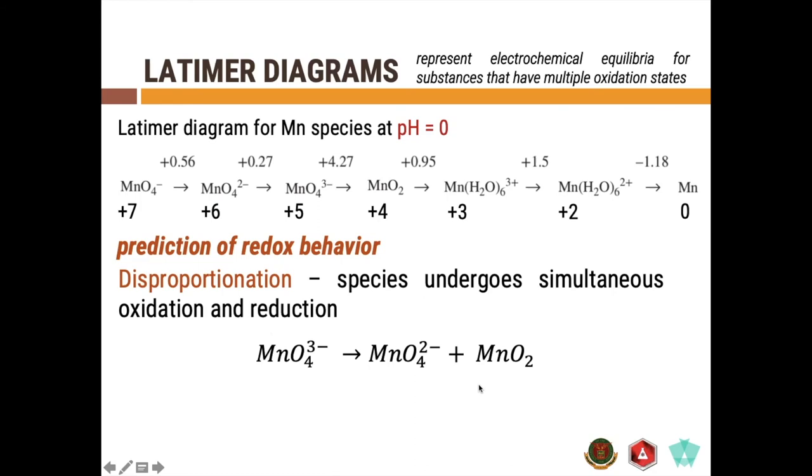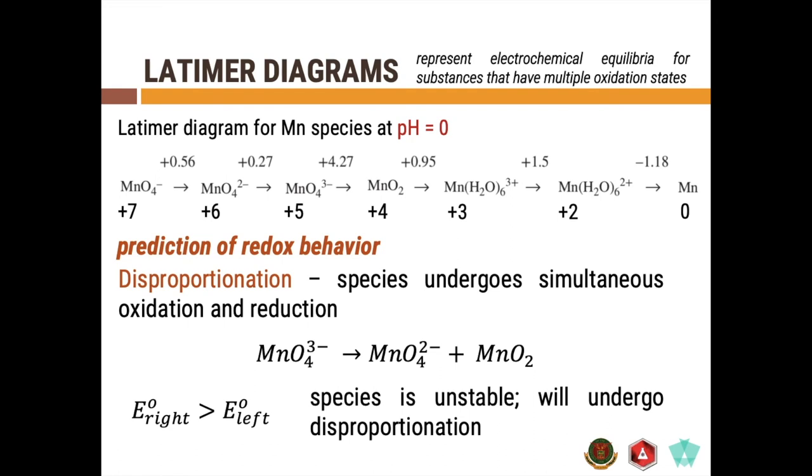So, how do we know that this disproportionation reaction is spontaneous? Well, we can look at the potential using the Latimer diagram for the substance that undergoes disproportionation reaction. In this case, that is MnO4 3 minus. And you need to look at the reduction potential to its right and the standard reduction potential to its left. If the standard reduction potential to its right is greater than the standard reduction potential to its left...